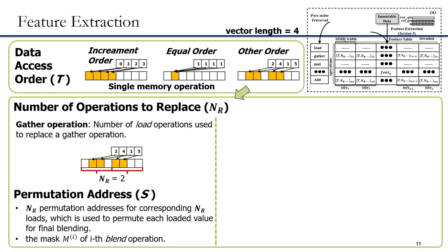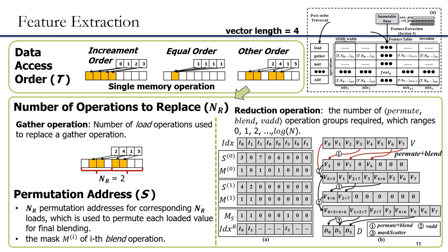The blend mask M is also extracted from the immutable data. For a reduction operation, NR indicates the number of permute-to-blend operation groups required, which ranges from 0, 1, 2 to log N. We also extract permutation S and blend mask M for the reduction permutation. As shown in the slide, V0, V3, V4, and V6 are reduced into memory location I0, whereas V1, V2, and V7 are reduced into memory location I1. Therefore, we need NR equals 2 permutation addresses denoted as S0 and S1, and corresponding masks for blending operations denoted as M0 and M1. The mask MS is also generated for storing the final reduction results into memory.